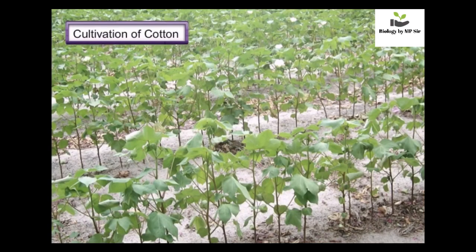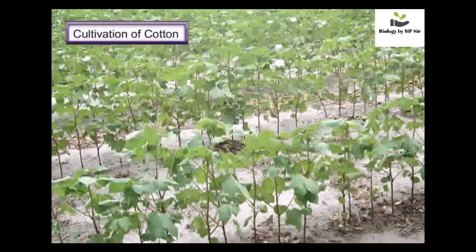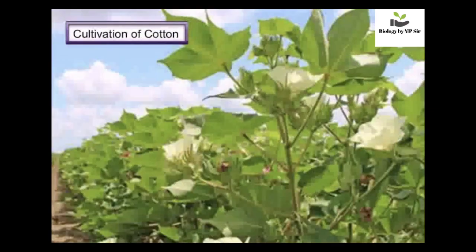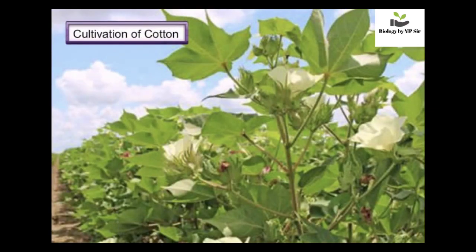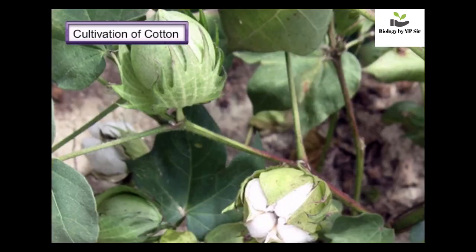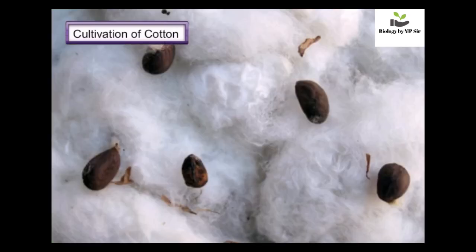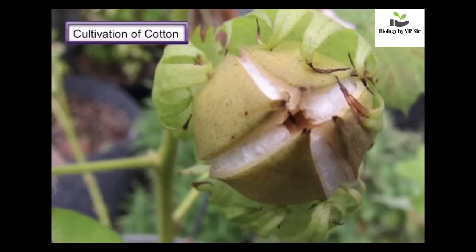Cotton plants are bushy and 1 to 2 meters tall. The plants start flowering in about 60 days and give white and yellow flowers, which turn reddish in a few days. Flowers slowly grow into spherical, walnut-sized structures called cotton balls.